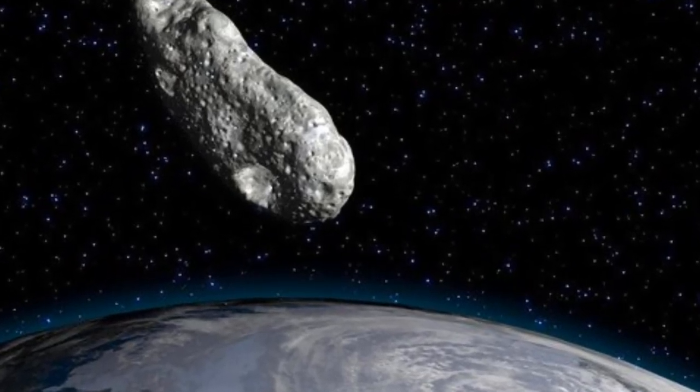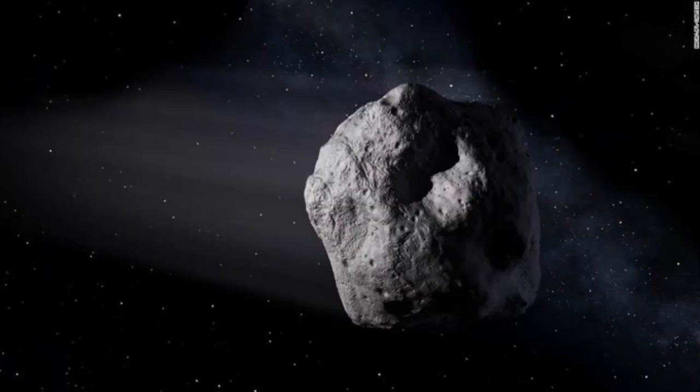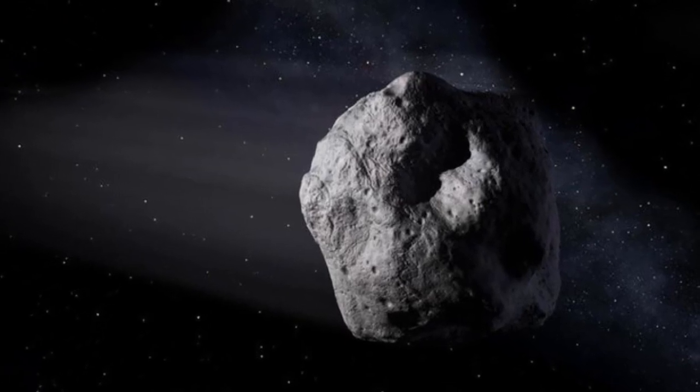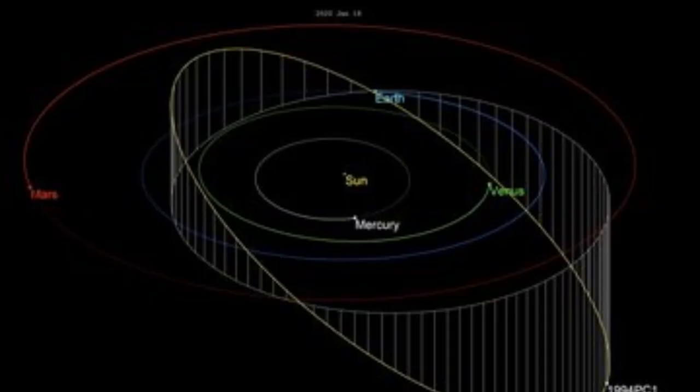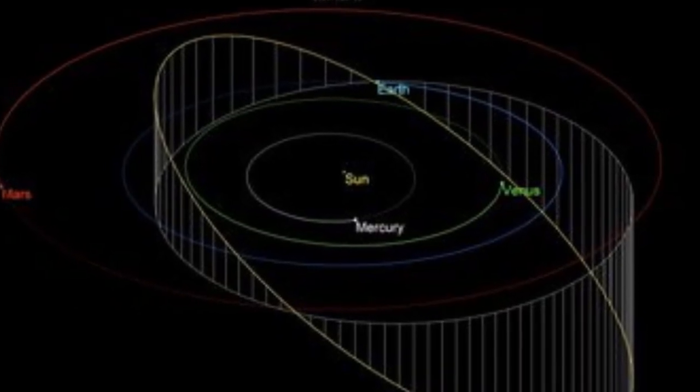NASA identifies asteroids as potentially hazardous if they are more than about 140 meters in size with orbits that bring them as close as within 4.6 million miles of Earth's orbit around the Sun.